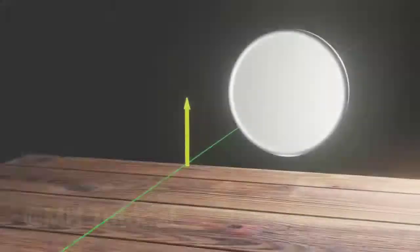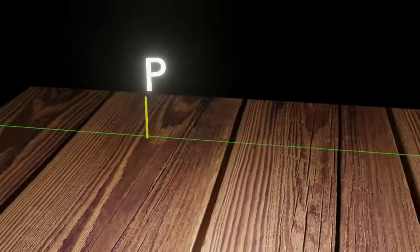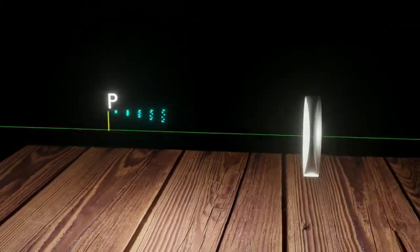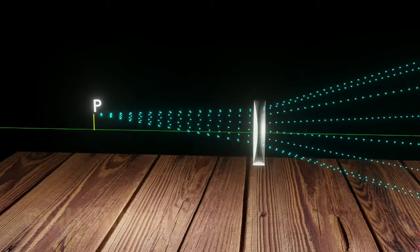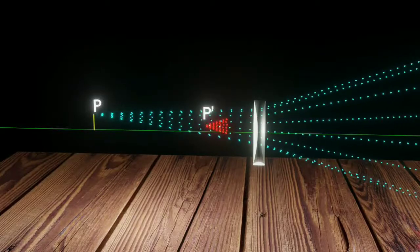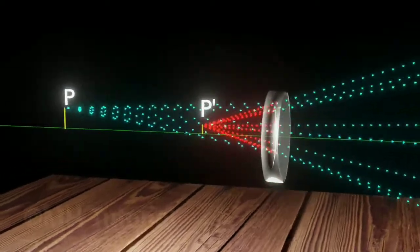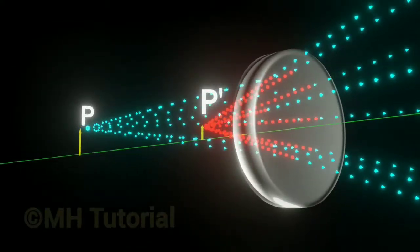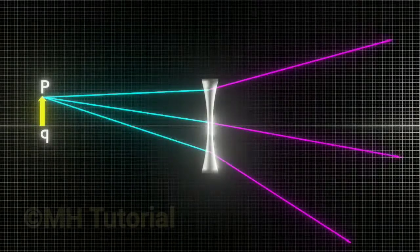Now we look at a concave lens. The rays emitted from point P pass through it, and after refraction the rays tend to spread. If you look closely, you can imagine that the refracted rays are coming out of some other point in front of the lens. An image of point P is formed at that P' point, and underneath P' a right-side-up image of the entire arrow is formed.